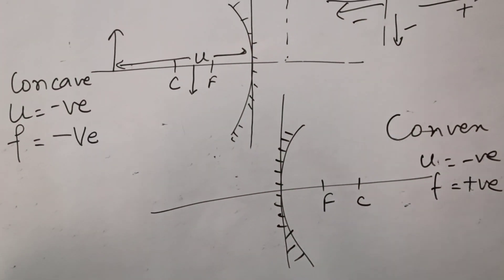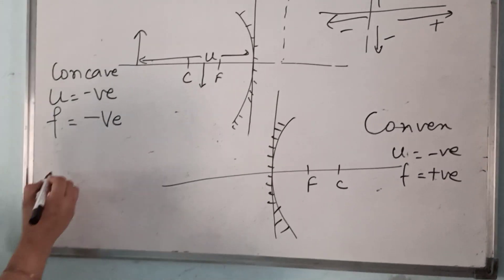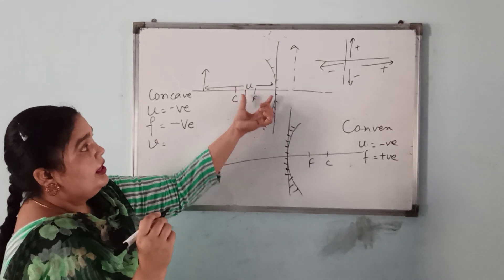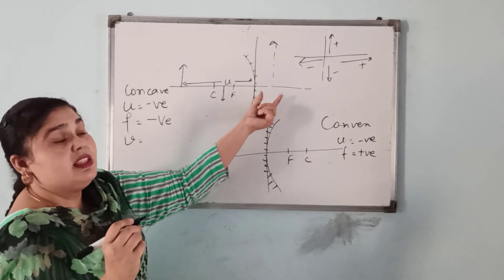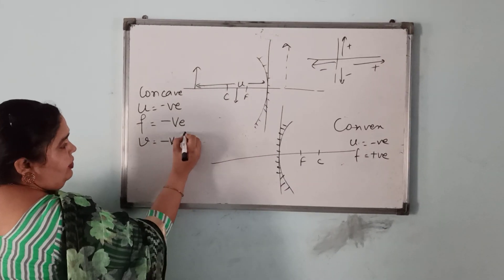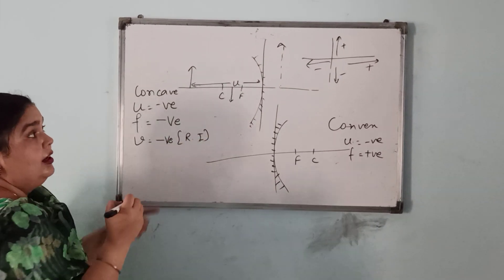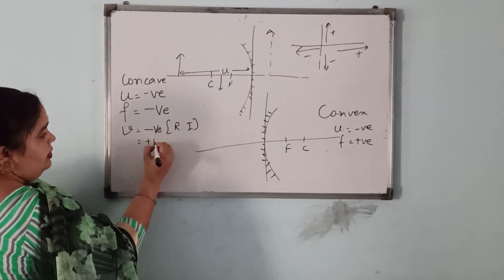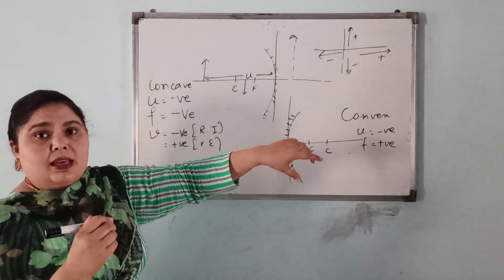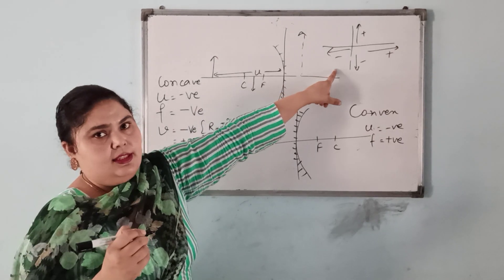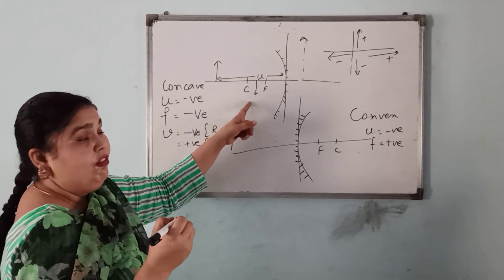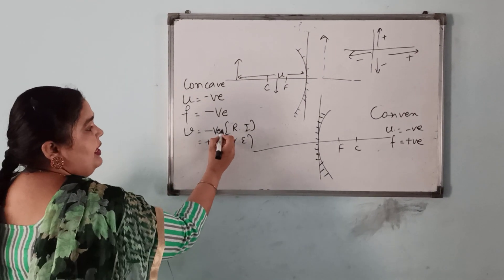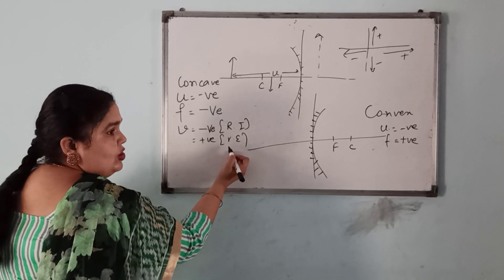According to this system, F for a convex mirror will be positive. Now, V is the image distance. If the image is real and inverted, V will be negative — the real inverted image falls on the left side of the coordinate system. But if the image is virtual and erect, V will be positive because it falls on the right side.